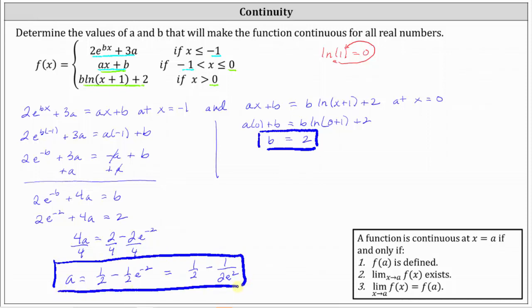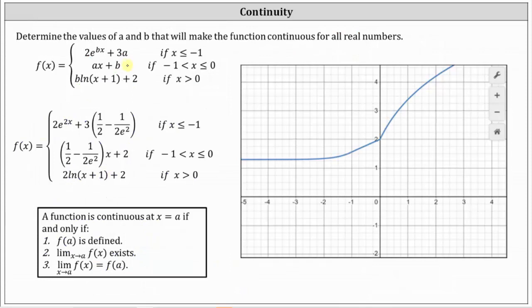And let's go ahead and check this graphically. So here I've replaced a and b in the original problem with the values that we found, and the graph is shown on the right. Notice how the graph is continuous for all real numbers. We can sketch the graph without lifting up our pencil because there are no holes or breaks in the graph, making the function continuous. I hope you found this helpful.